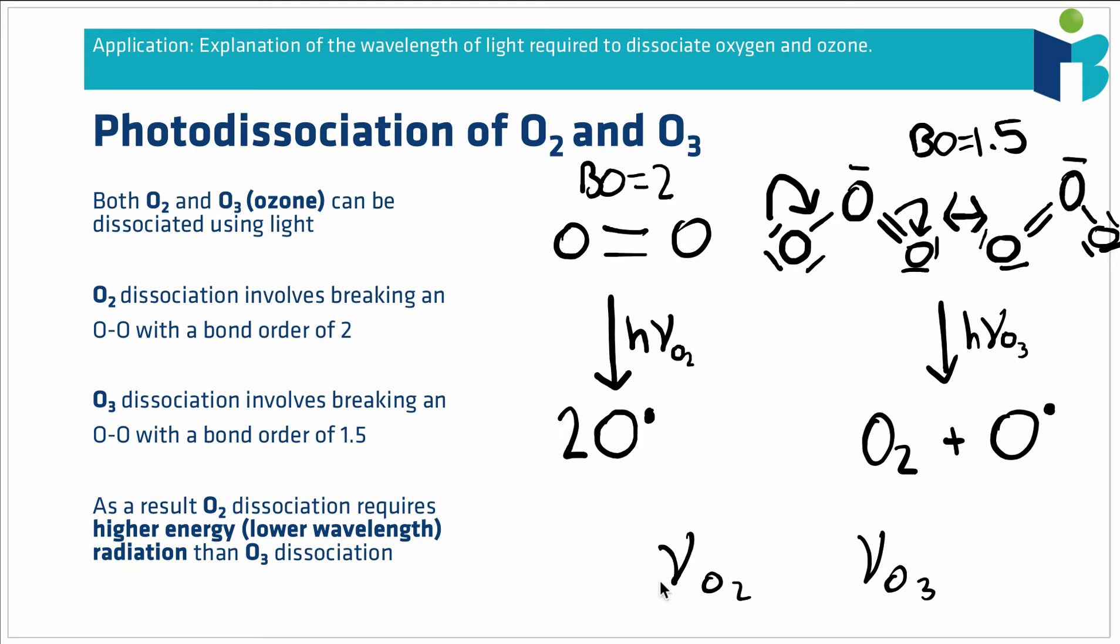That means the frequency of light required to break the O2 bond is higher, because you need more energy to break that bond which corresponds to a higher frequency of radiation. You could flip this around and talk about it in terms of wavelength. In that case, breaking the O2 bond would require a lower wavelength of radiation, because although high frequency corresponds to high energy radiation, low wavelength corresponds to high energy radiation.